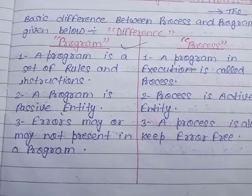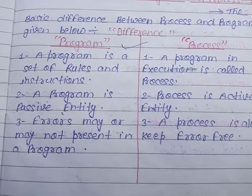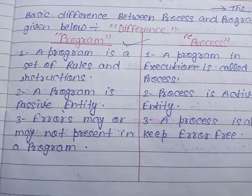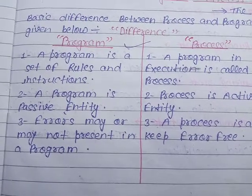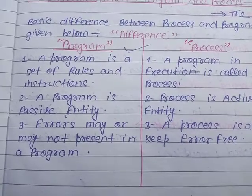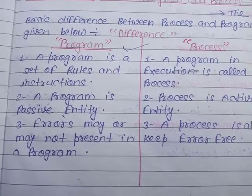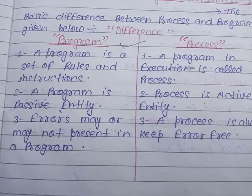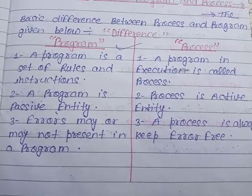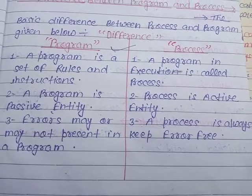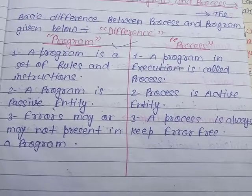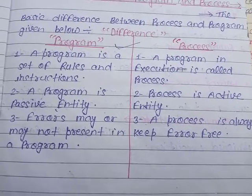Errors may or may not be present in a program — bugs may or may not be present. Whereas a process is always error-free, meaning there are no errors present in a process.